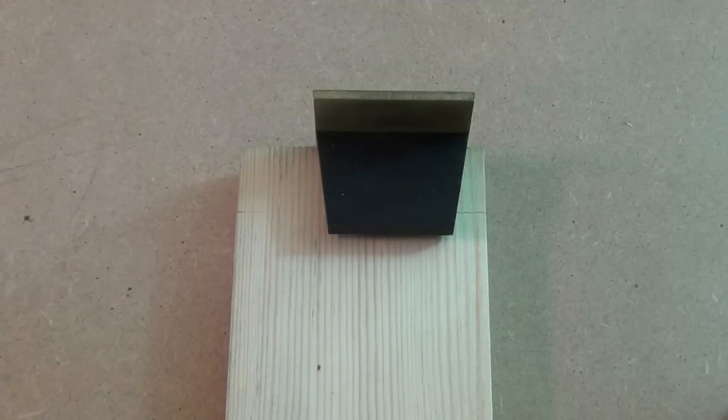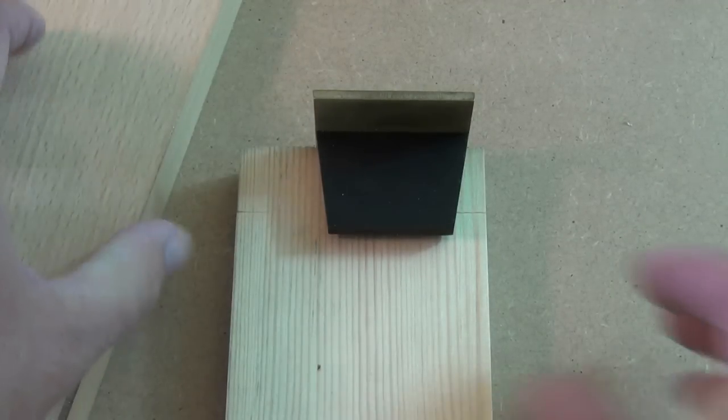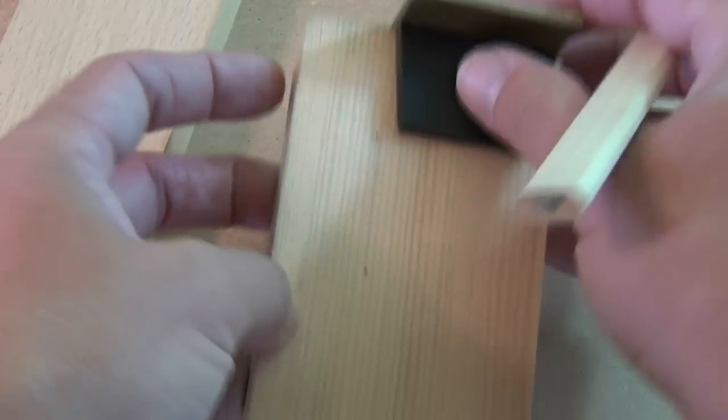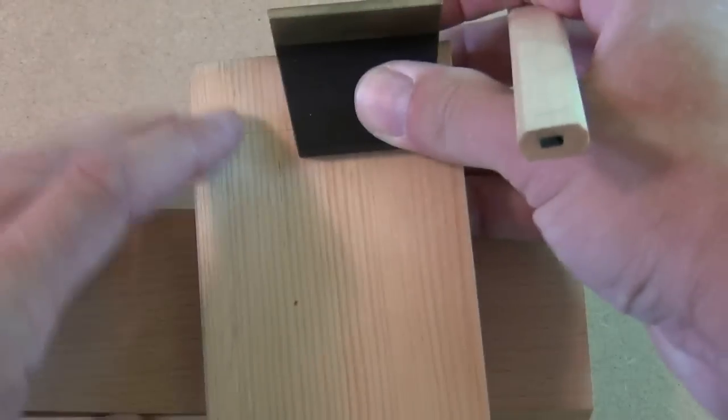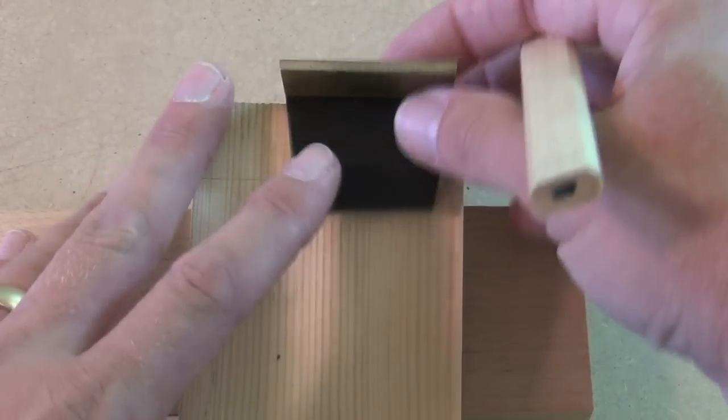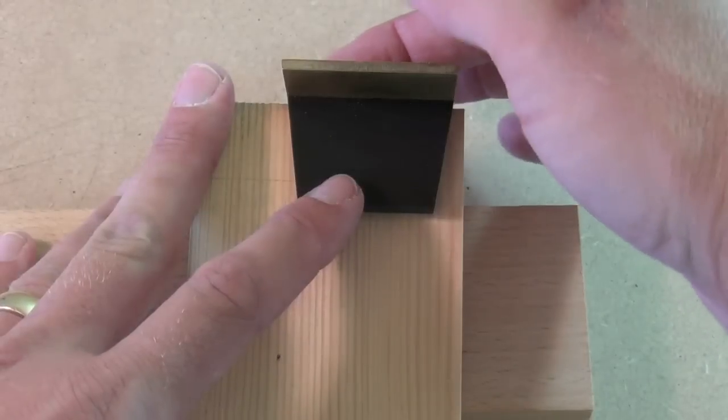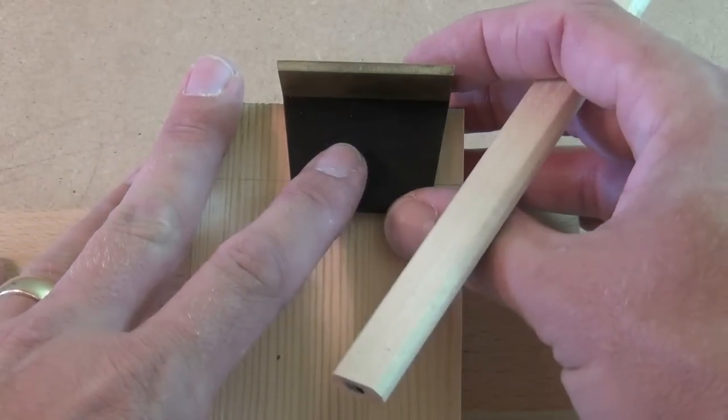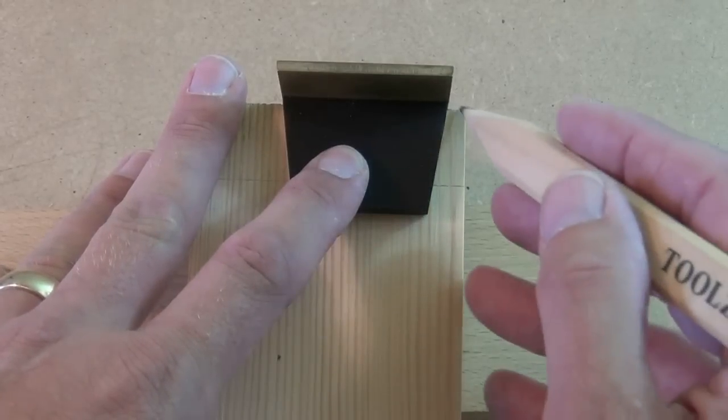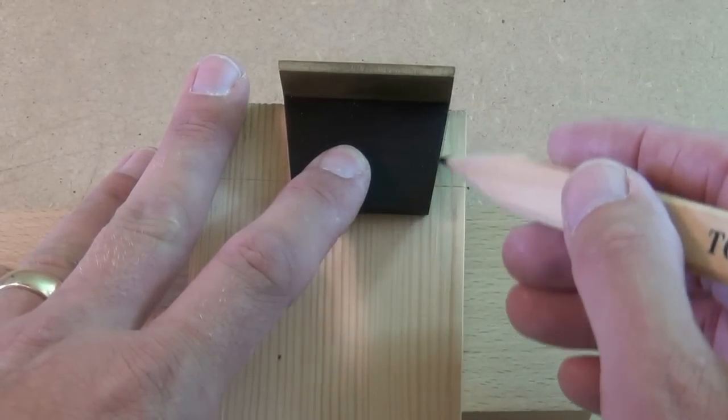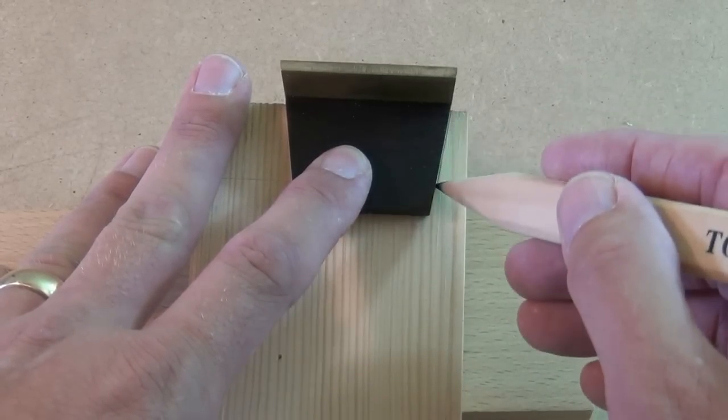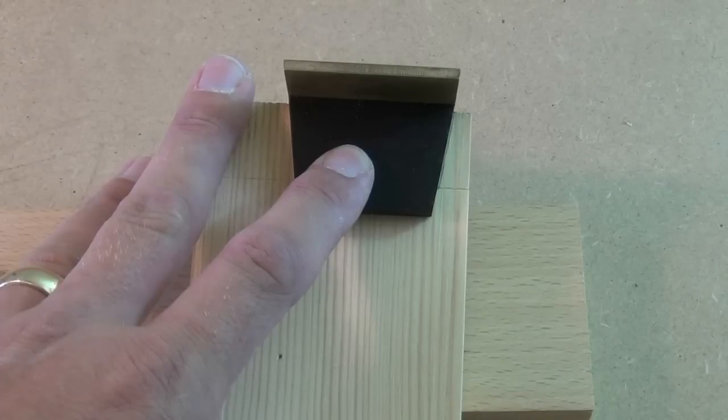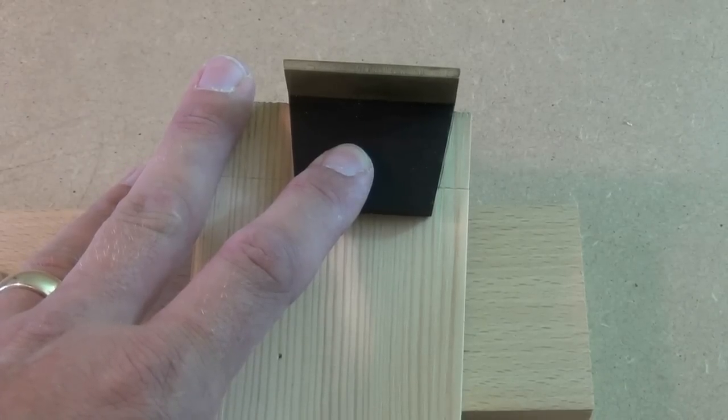And that's simply placed. The brass stock is placed on the end of the work, slid down tight. And then we can mark either with a sharp pencil, or if we wish to we could do that with a marking knife.